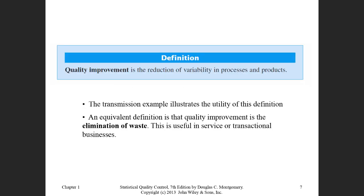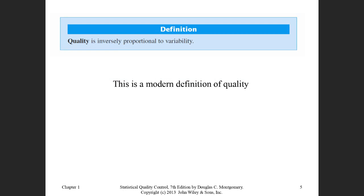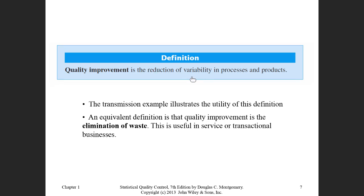There is also a definition for quality improvement and what differentiates it from quality. Quality is the baseline when you start production or service. Quality improvement is the continuous practice you must conduct throughout the business. One definition of quality improvement is the reduction of variability in processes and products — it is a continuous practice that must never stop.